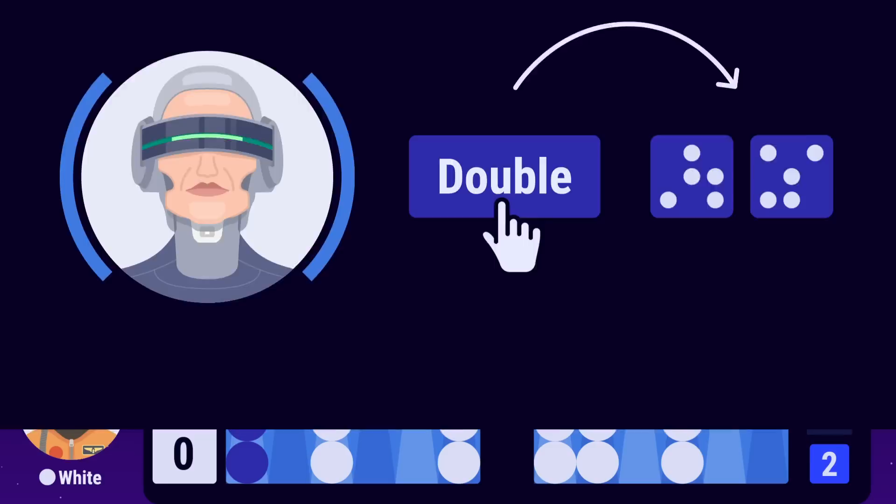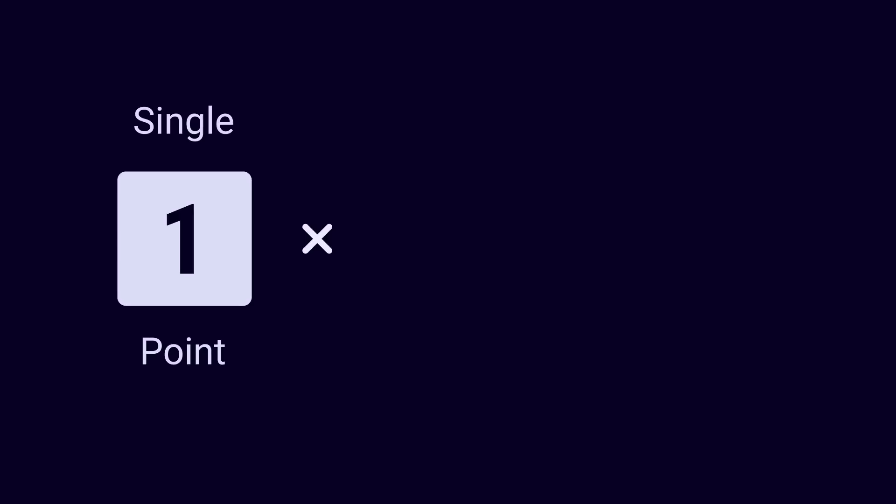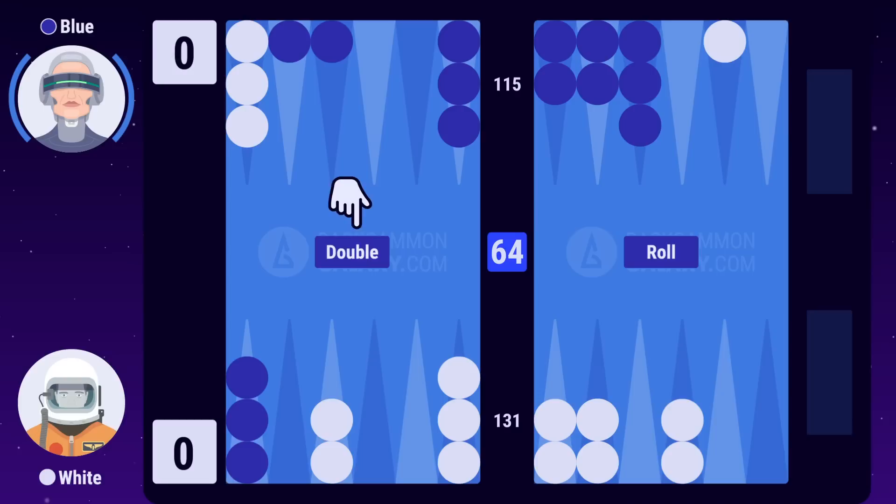The cube must be offered when it's your turn and before rolling the dice. The points won in the game are multiplied by the level of the doubling cube. When the cube is first offered and taken, the level is raised from 1 to 2. The levels can only double up one step at a time. Winning a single game with the cube level on 2 will give you 2 points. Winning a gammon, which is 2 points, with a cube level of 4 will give you 8 points.